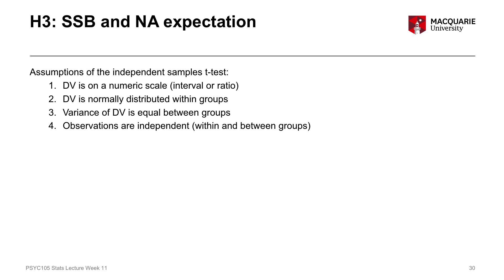Our assumption of independence is met through our sampling design, just like it has been for all the other tests we've run, and we know that our dependent variable is on a numeric scale — this is our negative affect expectation variable. So the only two assumptions we need to test are the normal distribution of negative affect within our two groups and that the variation or spread of scores in negative affect is equal between the two groups. Let's start with the normal distribution.